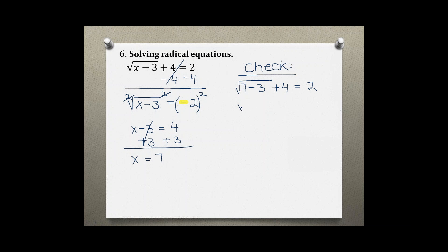Seven minus three is the square root of four plus four, which should equal two. The square root of four is two, so two plus four is six, which is not equal to two.